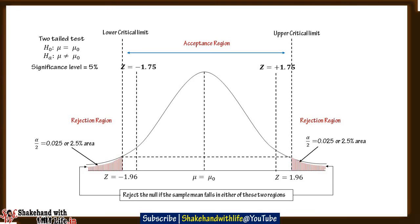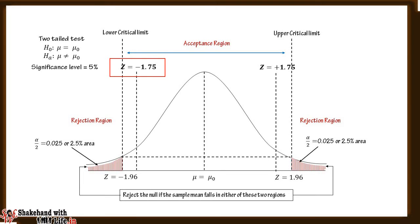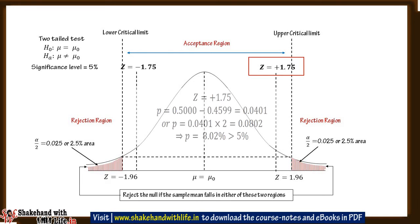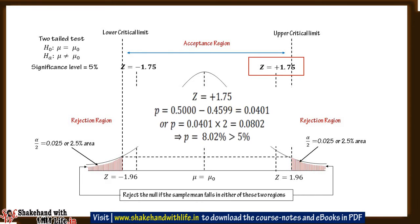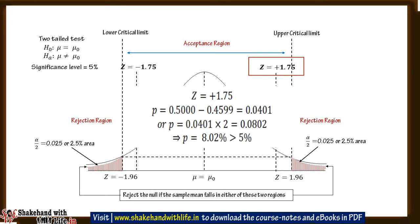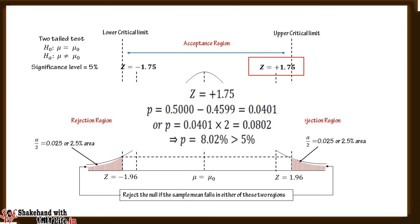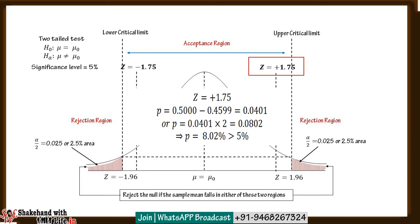In case of a two-tailed test, the p-value is twice the tail area. If the calculated test statistic falls on the left tail, take the area to the left and multiply by 2; if it falls on the right tail, take the area to the right and multiply by 2. For example, if Z = +1.75, the area to the right is 0.0401; multiplying by 2 gives a p-value of 0.0802 or 8.02%.